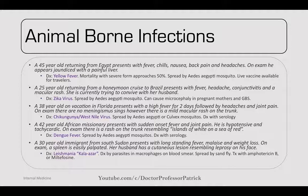A 30-year-old immigrant from South Sudan presents with long-standing fever, malaise, and weight loss. On exam, a spleen tip is palpated. His partner has a cutaneous lesion resembling leprosy on his face. The diagnosis is leishmaniasis (Kala-azar). Diagnose by finding parasites in macrophages on blood smear. It's spread by the sand fly. Treat with amphotericin B and miltefosine.